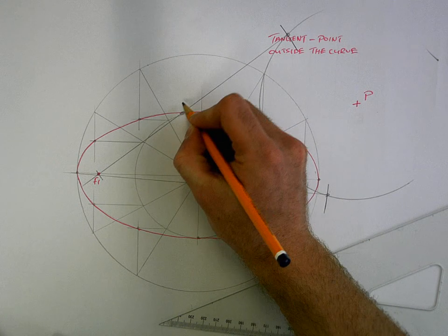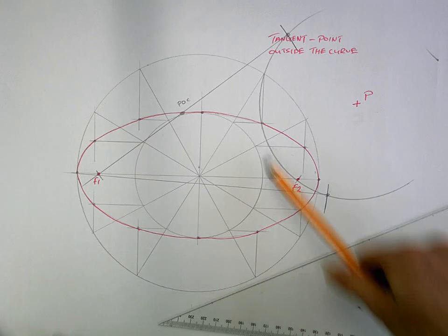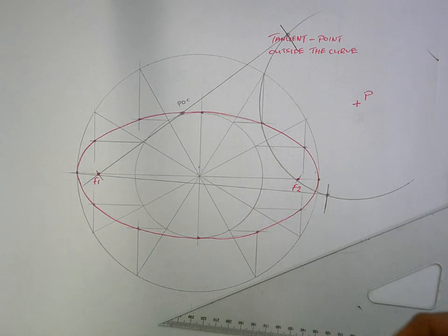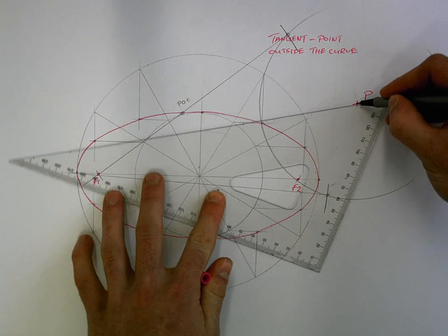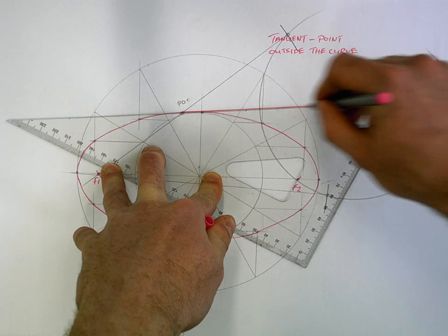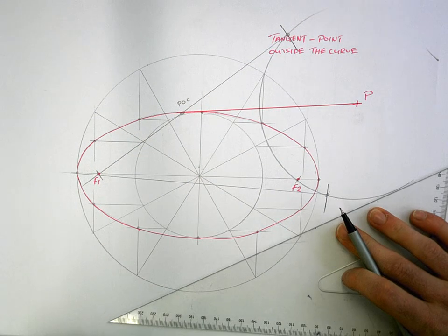So this is going to be the point of contact, the exact point of contact. Label it because that's what they're looking for. And then it's just a case of joining the dots together. So your point of contact up to point P. And that's your tangent.